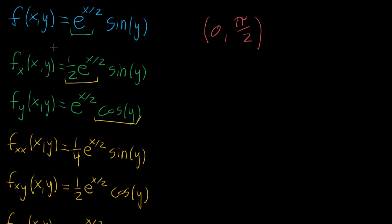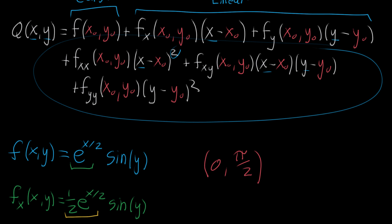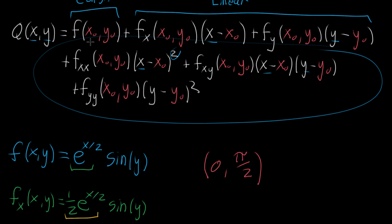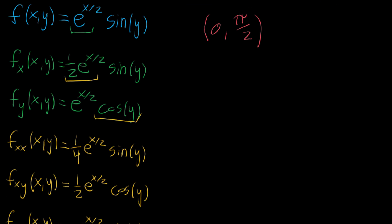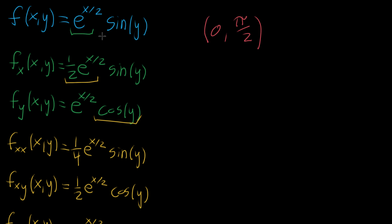Now we need to evaluate all of these partial derivatives at the specific point. Looking back at the original formula, we need f, both first partial derivatives, and all second partial derivatives evaluated at the point. I'm realizing I made a little mistake — there should be a one half out in front of each of the second partial derivative terms. The mixed partial derivative still has coefficient one, but the pure second partial derivatives should each have a one half. With that correction noted, let's plug in the point zero and pi halves to each one.